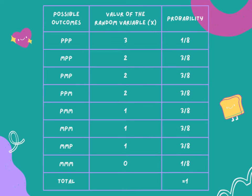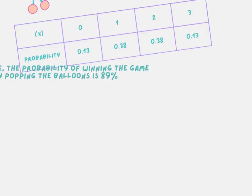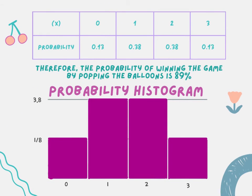Here we can see the possible outcomes and the probability. We will convert the probability to decimals, and here we can see the probability histogram. To get this, we will add 0.38 plus 0.38 plus 0.38 plus 0.13 and we will get 0.89, converting it to a percentage. Therefore, the probability of winning the game by popping the balloon is 89%.